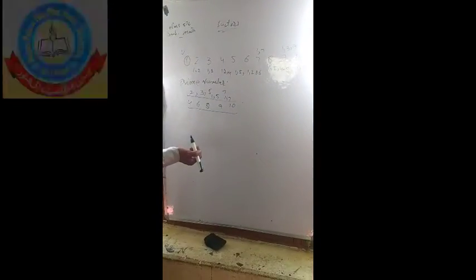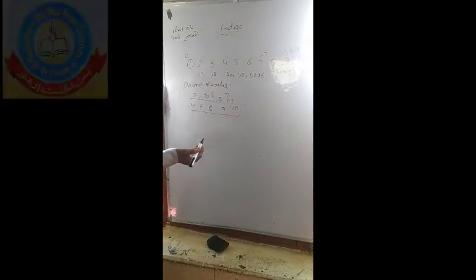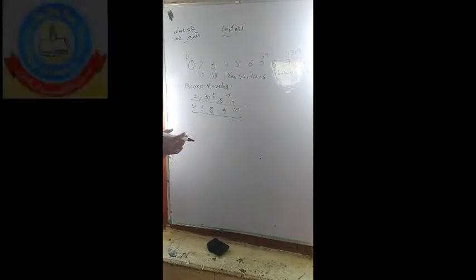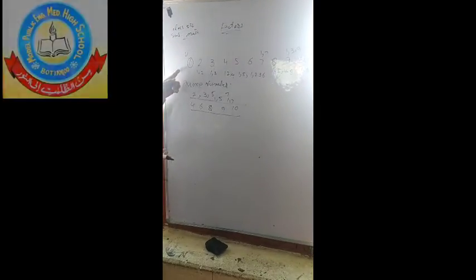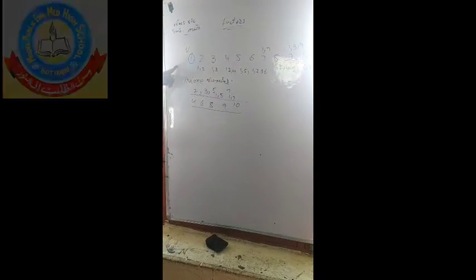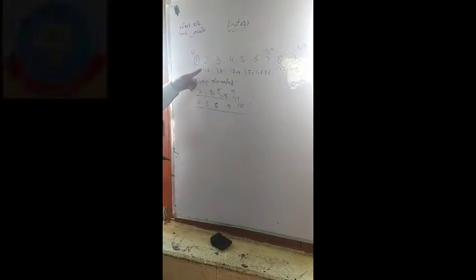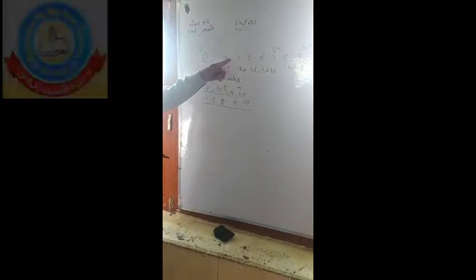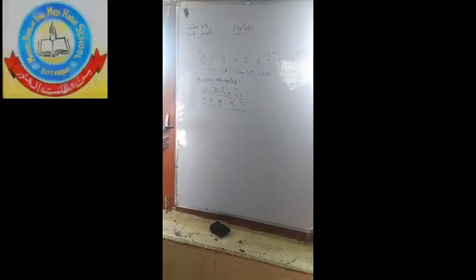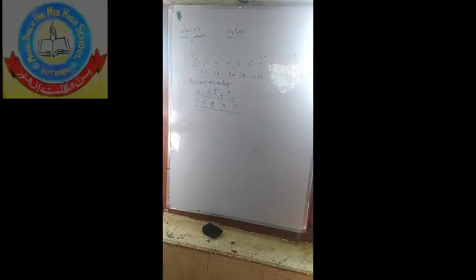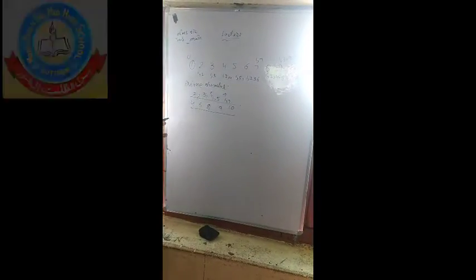So we can observe: one is a unique number, two and three are prime numbers, and four is a composite number. A composite number is one that has more than two factors — it can be divided exactly by numbers other than just one and itself.